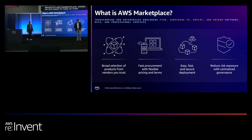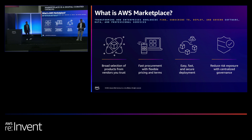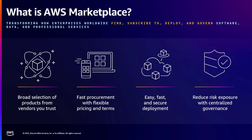If you're not familiar, AWS Marketplace is a digital curated catalog that offers thousands of products from independent software vendors, data providers, and professional services providers. AWS Marketplace offers a broad selection of products from over 70 categories including Generative AI, Machine Learning, DevOps, Security, Business Apps, and many others.